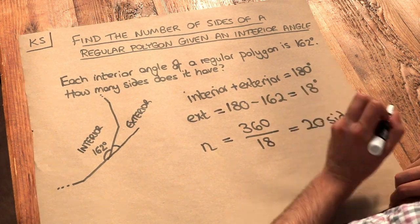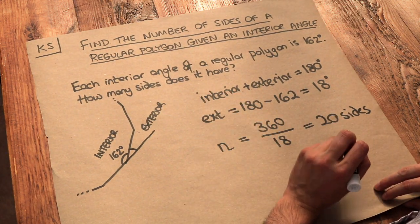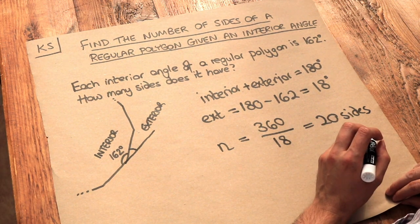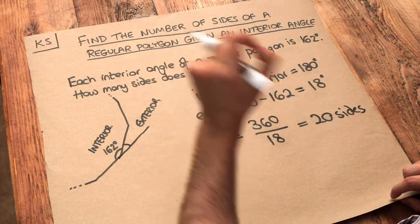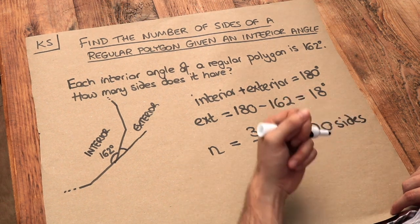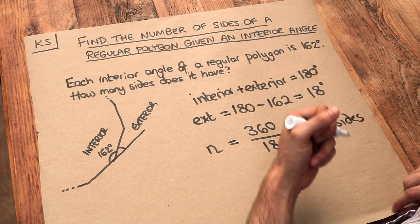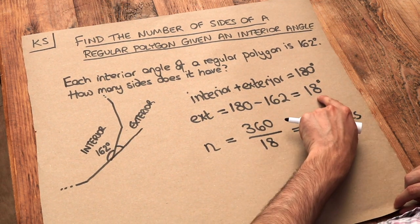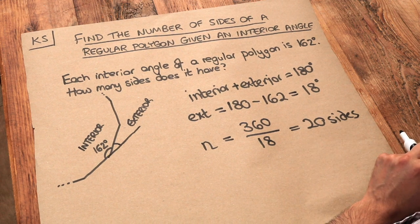And that's because the total exterior angle of any polygon is 360 degrees. So 360 degrees divided by the number of sides will give you the exterior angle. And similarly, 360 divided by the exterior angle will give you the number of sides, which is what we've done here.